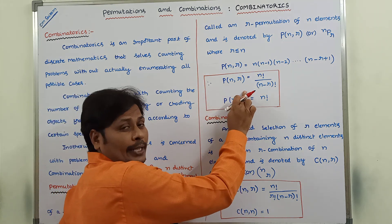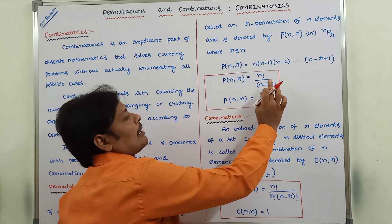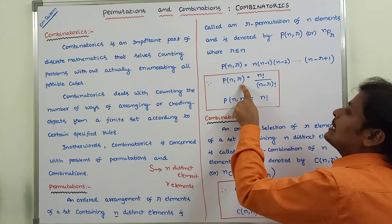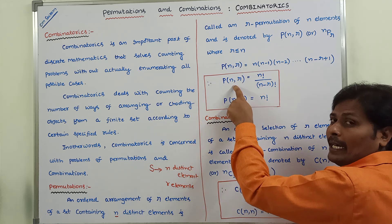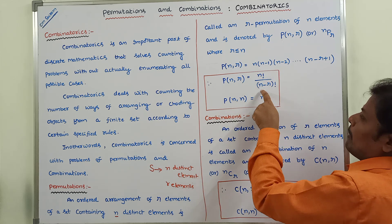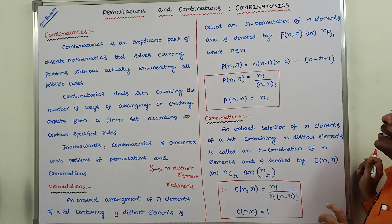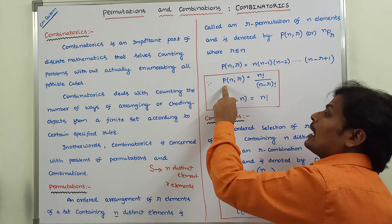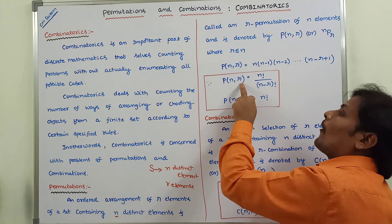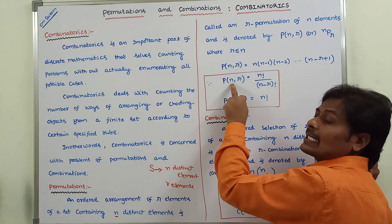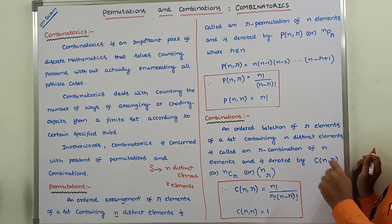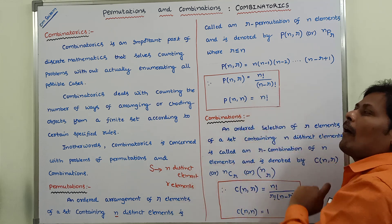The formula for permutation is: P(N, R) equals N factorial divided by (N minus R) factorial. This gives the permutation of R elements from a set of N elements. So P(N, R) = N! / (N−R)!. An ordered arrangement of R elements of a set containing N distinct elements is called an R-permutation of N distinct elements.